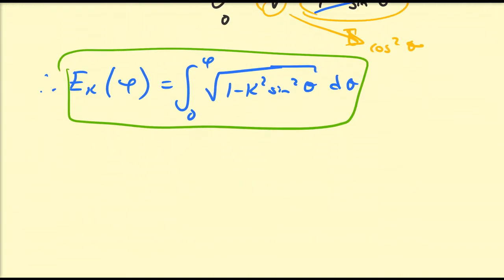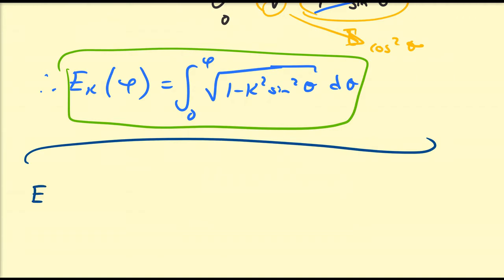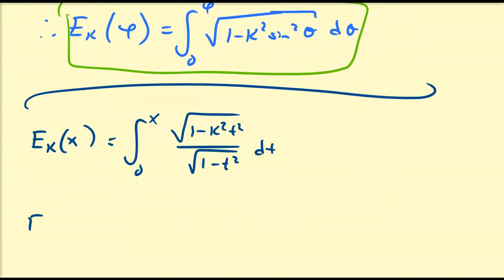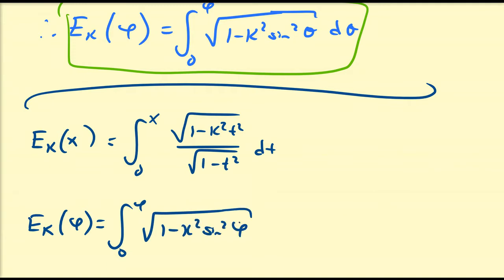Let's introduce some terminology. We have E_k(x) equal to the integral from 0 to x of the square root of 1 minus k squared t squared over the square root of 1 minus t squared dt. And we also have E_k(φ) equal to the integral from 0 to φ of the square root of 1 minus k squared sine squared θ dθ. This last representation is what we call the trigonometric form of the elliptic integral E.